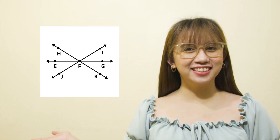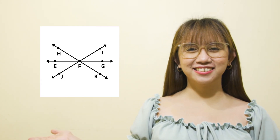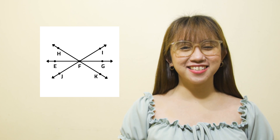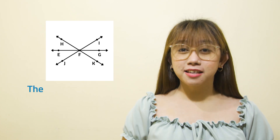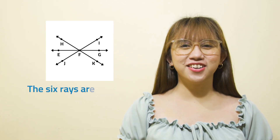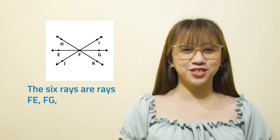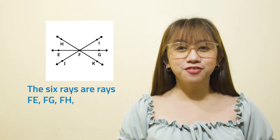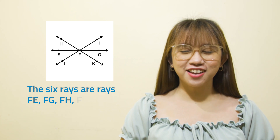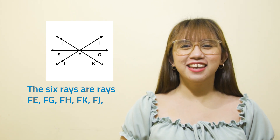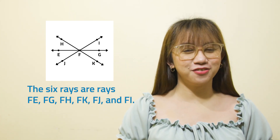Can you name at least six rays here? The six rays are ray FE, FG, FH, FK, FJ, and FI.